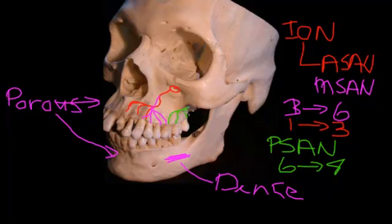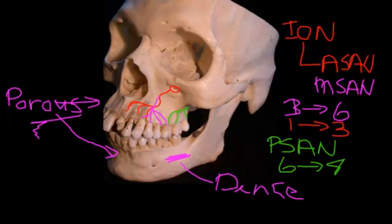So this is how the upper teeth on the buccal surface and the pulps are supplied. Remembering that this bone is porous means that when the time comes to anaesthetize these teeth, we can actually put the local anaesthetic solution immediately adjacent to the tooth we want to work on. That solution will get through the bone and affect the teeth because this bone is so porous.